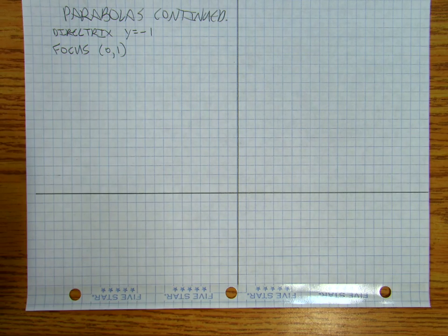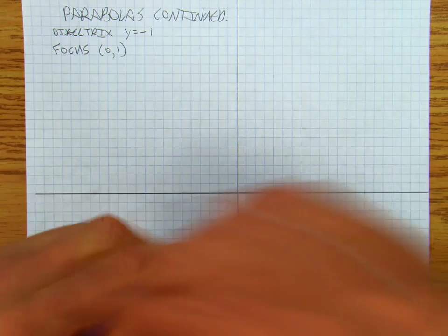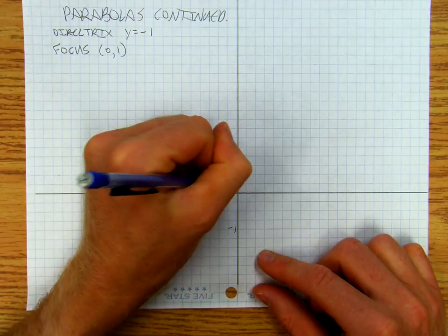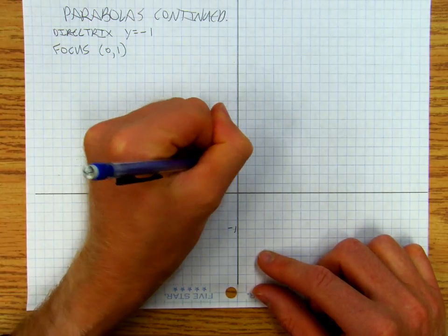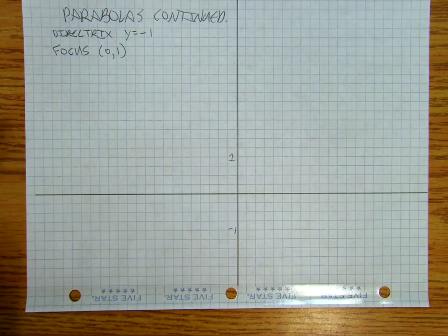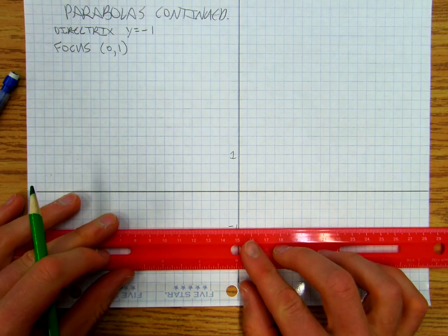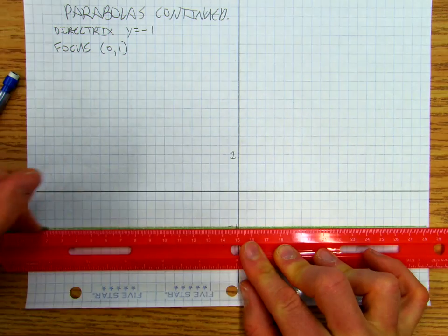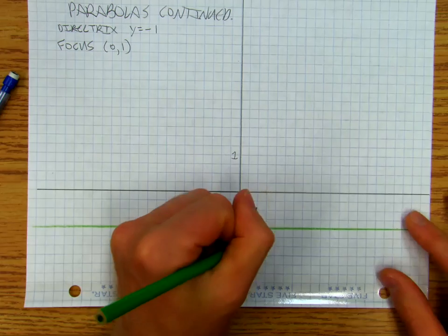So I take this, and I go, this is negative 1 right there, this is positive 1 right there. And at negative 1, we're going to make our fixed line, which is our directrix.